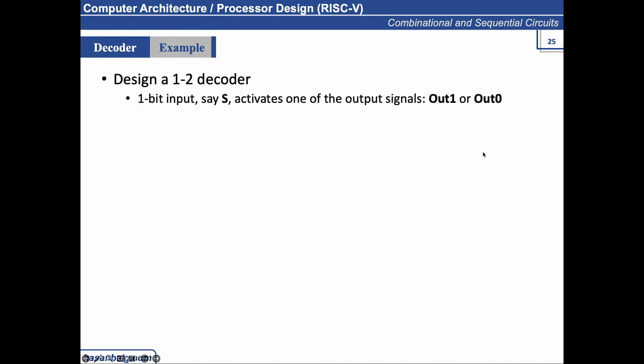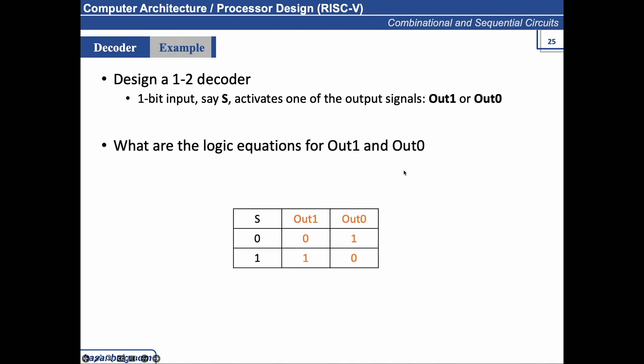So if I were to give you an example of designing a 1 to 2 decoder. 1 to 2 means like n is 1, and output is 2. 2 to the power 1 is 2. There is one input line. Let's say S. We can call it S. And sometimes it is called the select line. It activates one of the output signal out 1 or out 0. So the logic equations of this could be simply, if I were to ask you like, what is the logic equation of out 0? S bar. Simply S bar, and out 1 is S.